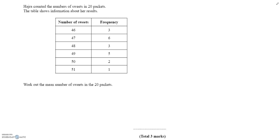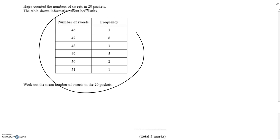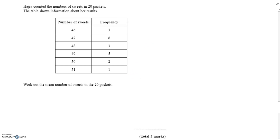In this video we're going to look at calculating the mean in a slightly different way. Here we're given what we call a frequency table, where the data is laid out in a slightly different fashion. We've got to be able to interpret that and work out the mean from this. We're going to start with the mean, so the title is: calculating the mean from a frequency table.